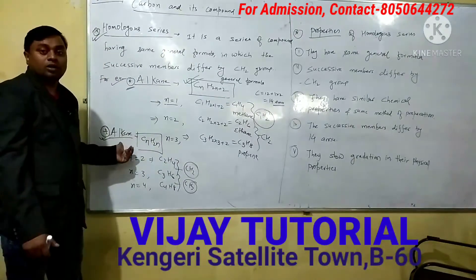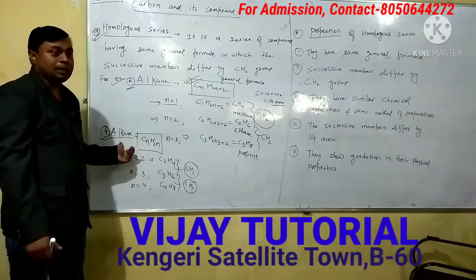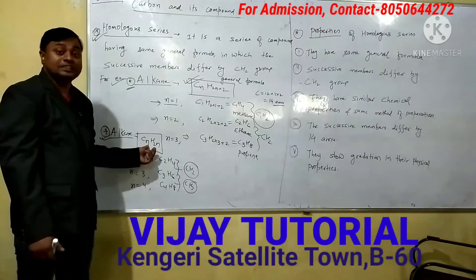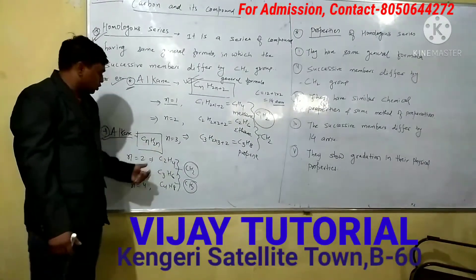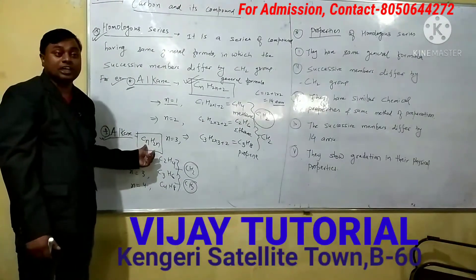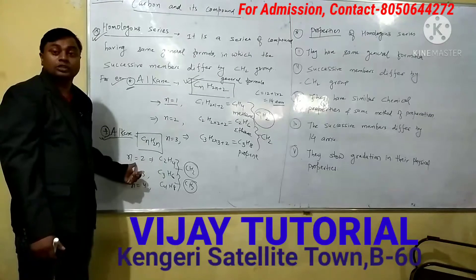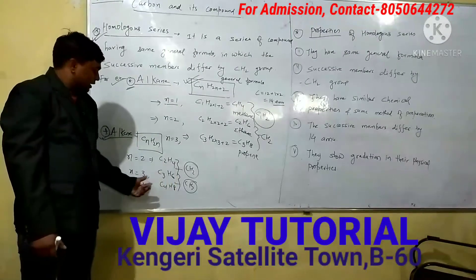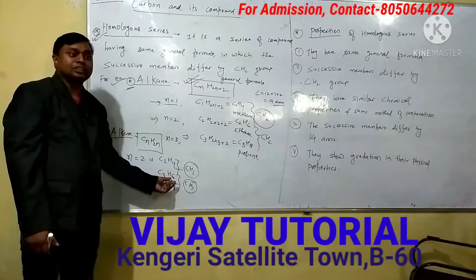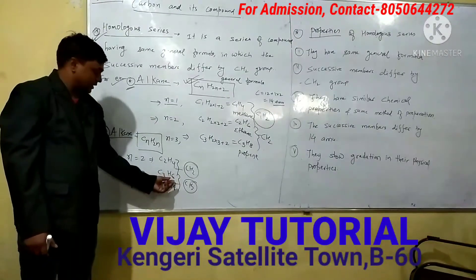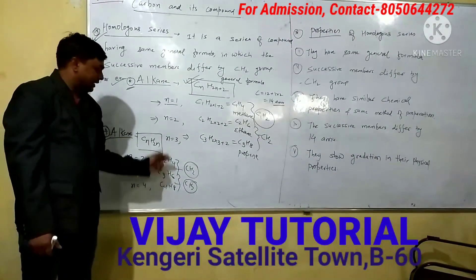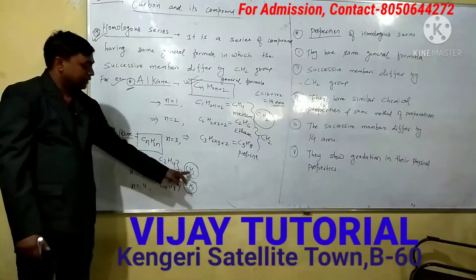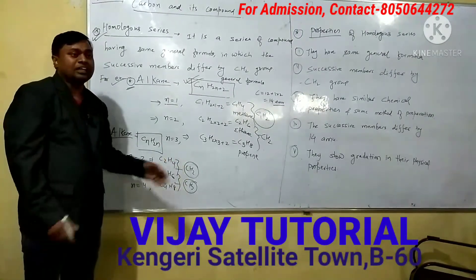Alkene is also an example of homologous series. The general formula of alkene is CnH2n. If you put n=2, we get C2H4, that is ethene. n=3 gives C3H6, that is propene. n=4 gives C4H8, that is butene. So there is a difference of CH2 group between the successive members.